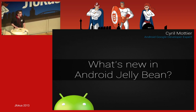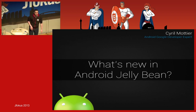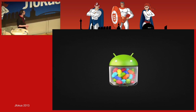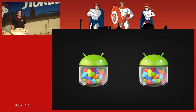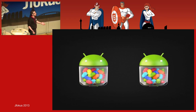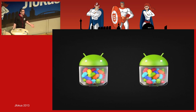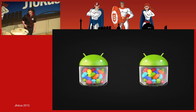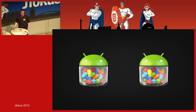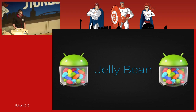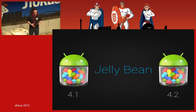Let's start with a simple game. This is the logo of Jelly Bean. Can you tell me what are the differences between the image on the right and the image on the left? There is no difference because they are both describing Android Jelly Bean. The only difference is that there are actually two different versions of Jelly Bean: the first one is 4.1, and the second one is 4.2.